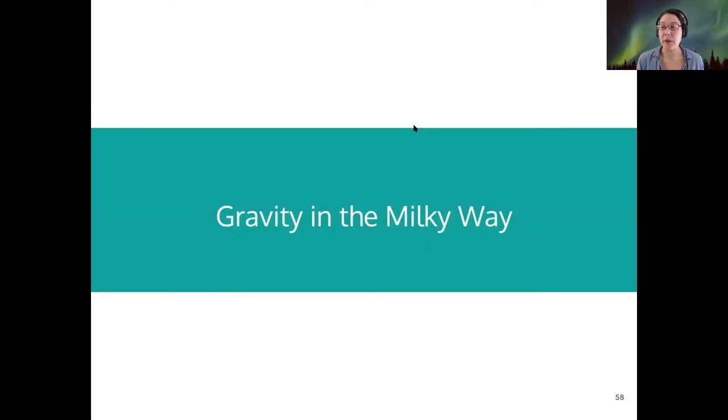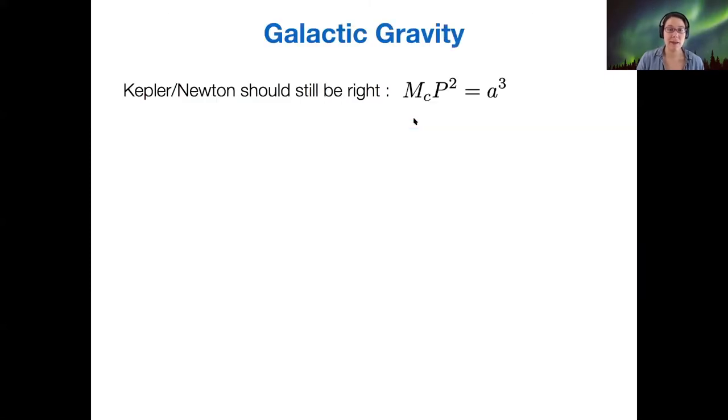So that brings us to gravity within our own Milky Way. This is where our story becomes a little more interesting. And the idea is that if the universal law of gravity is really universal, then it doesn't just apply to solar systems. It also applies to stars around a galaxy's center, right?